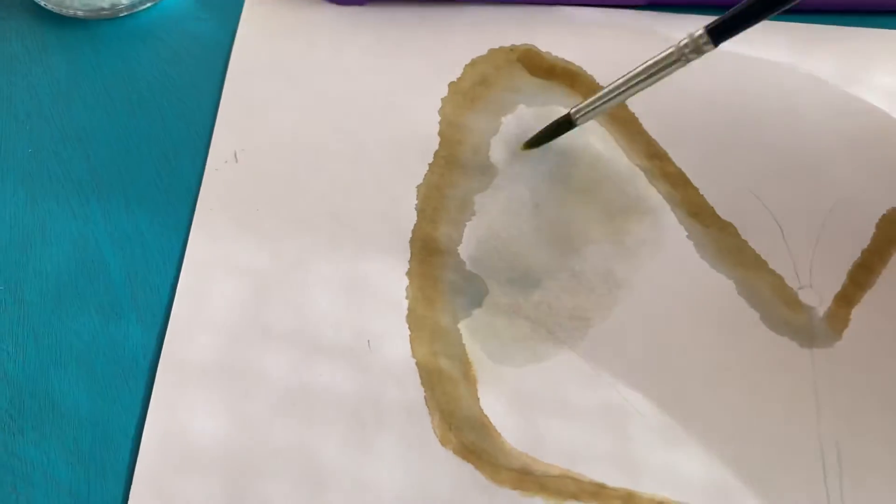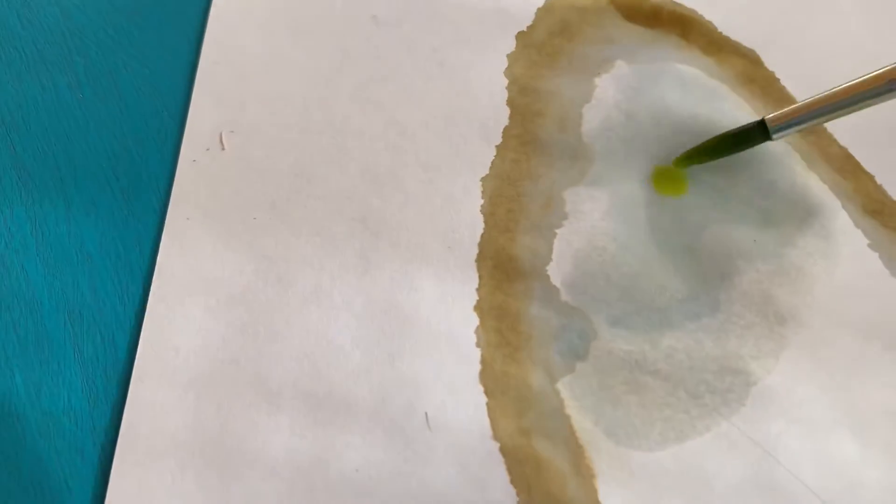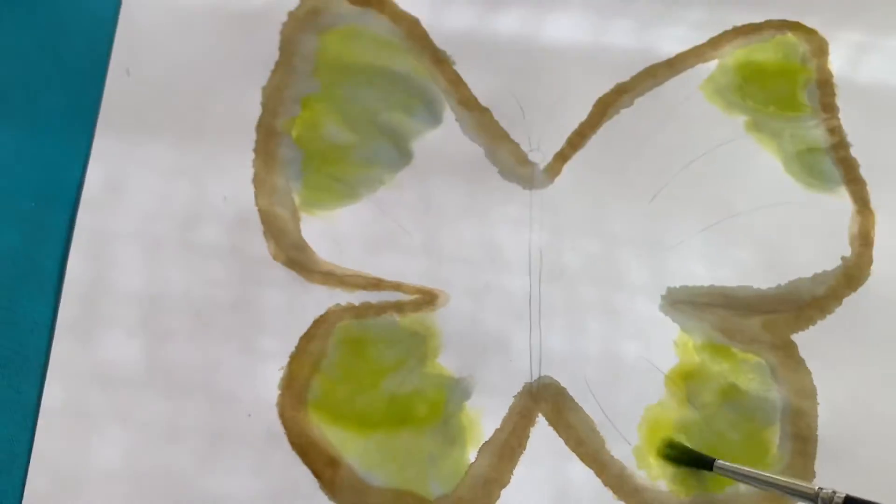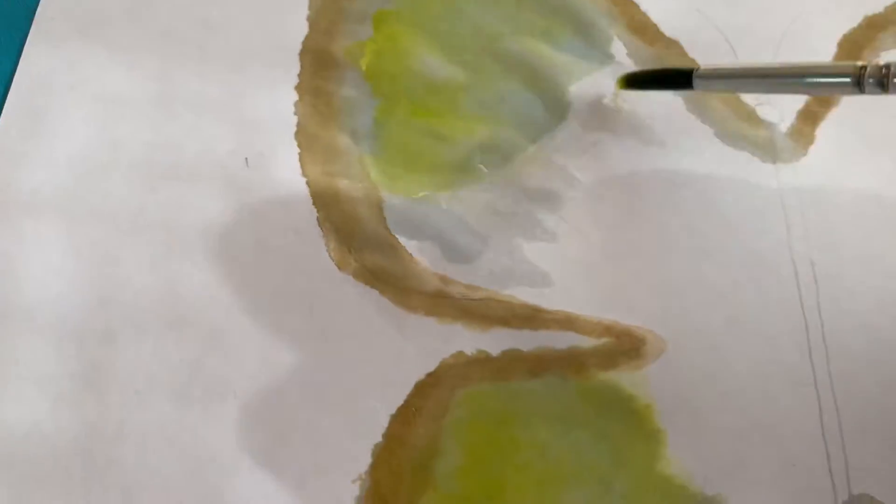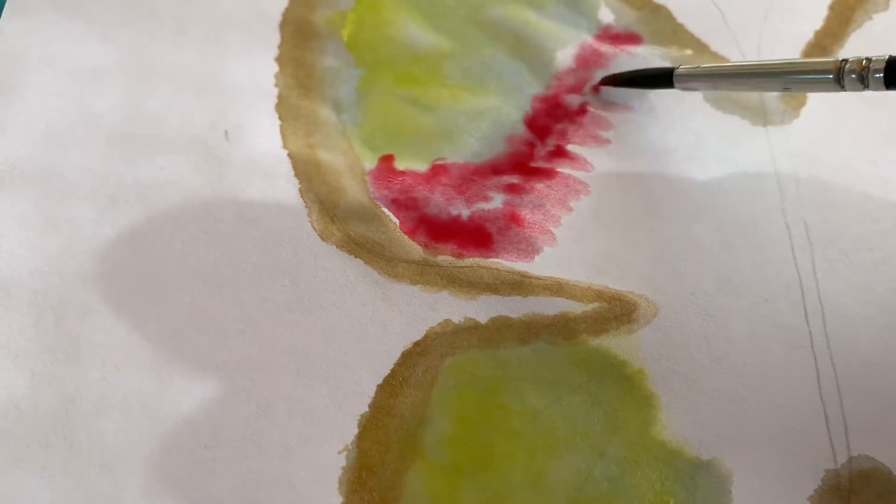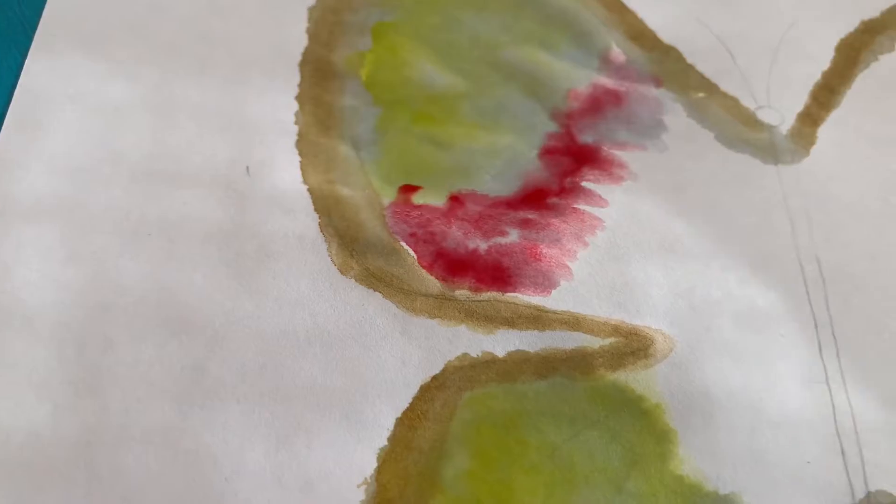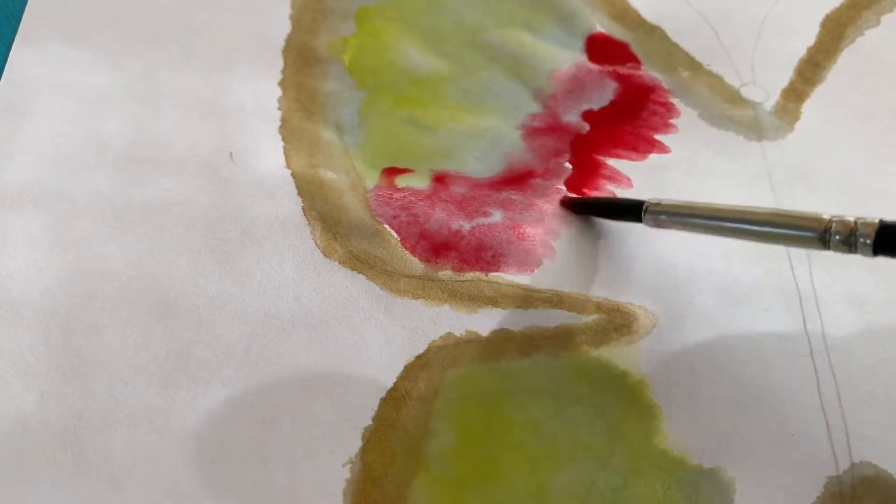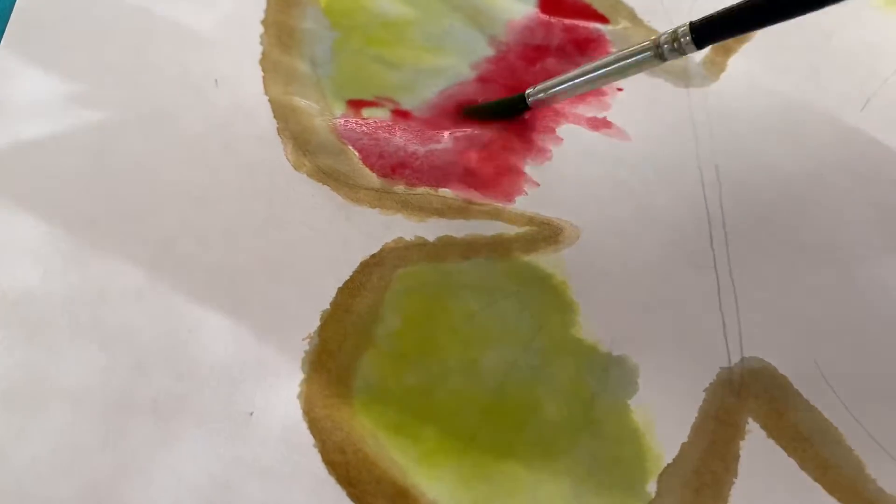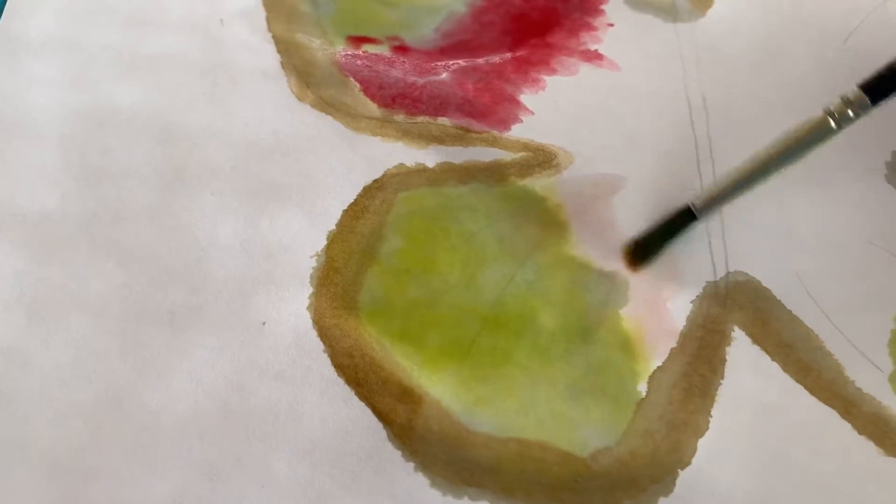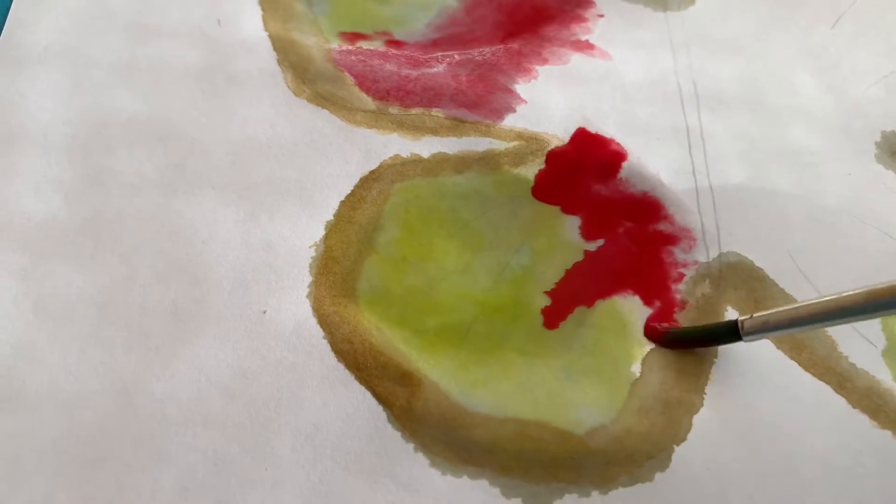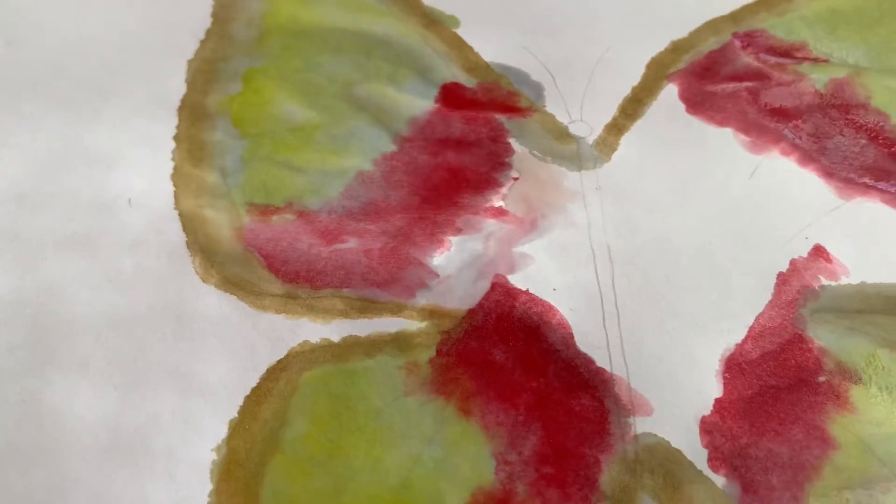Next, you're just going to dip the outer wings with water and add in the color green. You're just going to tap in the color like so. Then you're going to dip your brush in water again and add in a red color. Make sure it just lands wherever it wants. I know it's going to be messy and that's what we want. You're going to be doing this pattern a lot. First, dip in water and then color just like so.